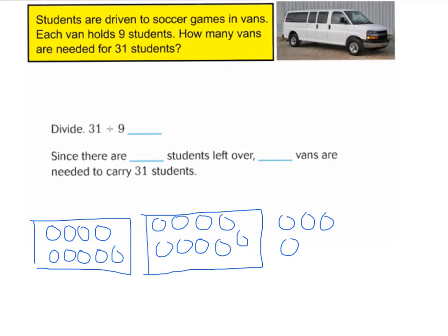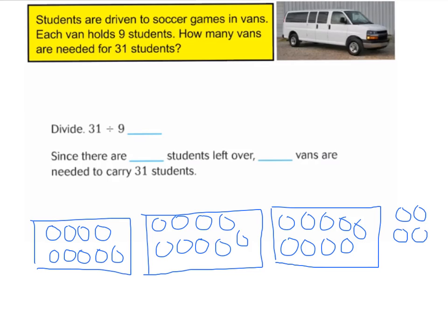I count another 9: 1, 2, 3, 4, 5, 6, 7, 8, 9. Here's another van. I have 3 vans and 9 students in each van — 3 times 9 is 27. I am very close to 31. Let me count how many more students I need: 28, 29, 30, 31. Now, do I have enough students to make another van? There need to be 9 students in a van, so these 4 kids are my leftover students — they are my remainder. So 31 divided by 9 is 3 with a remainder of 4.